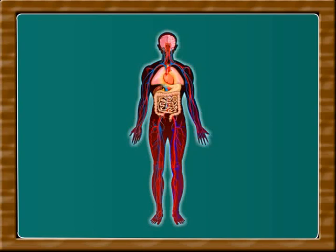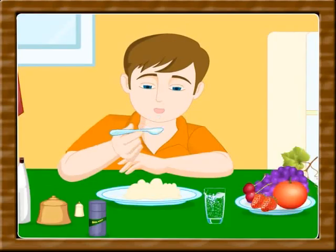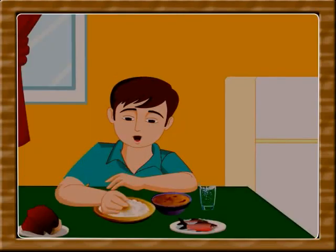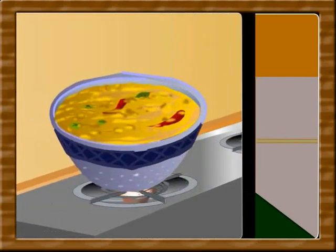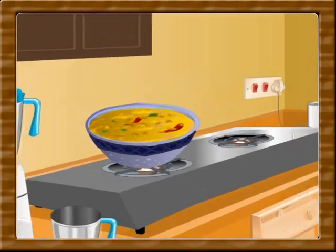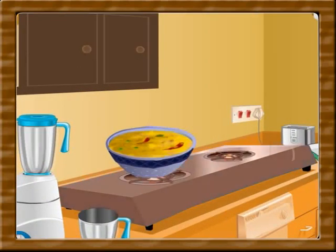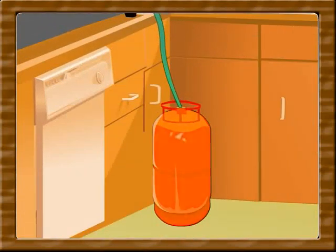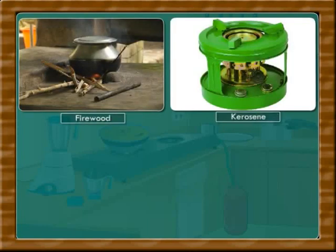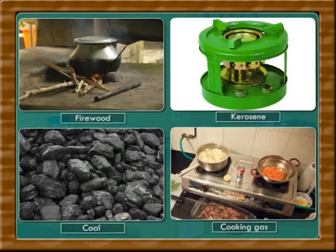We all know that in a human body, various reactions take place. When we wake up, we have breakfast. In the night, we have dinner. The food we eat is not raw — it is cooked food. For cooking food, we require a stove. The stove requires fuel. Fuel can be of any form such as firewood, kerosene, coal or cooking gas.